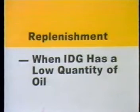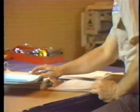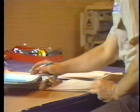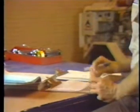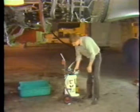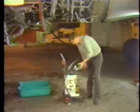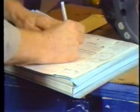You are now ready to replenish the IDG with oil. Replenishment procedures can be performed within three hours of engine shutdown on an IDG which has a low quantity of oil, or after the IDG case has been drained. When you replenish the IDG, use one of the oils specified in the approved oils list in the aircraft maintenance manual. Never mix types or brands of oil in one IDG system. If the same type of oil is not available, change the oil using the procedure described in section four, oil change. Record the type of oil you use in the maintenance log.